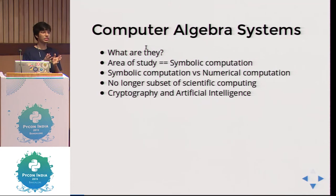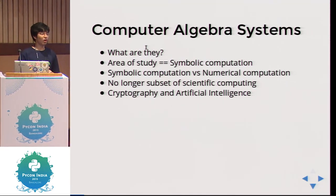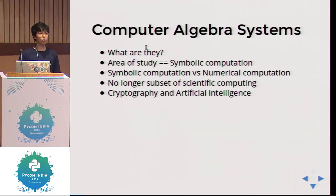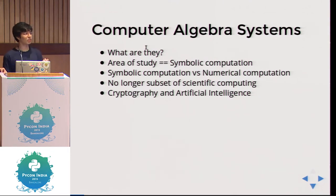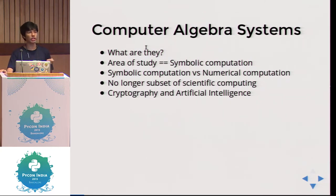What are computer algebra systems? They do algebra — they manipulate mathematical equations. Say you are solving a physics problem and you have a big equation and you want to calculate the integral of that; doing it manually is almost impossible. In theoretical research, solving equations is a very hard problem. Integrals are not a trivial problem — even doing them manually takes time. So if you have a system which does that for you, everything is fine. How is it different from numeric computation? That's the usual question: how is SymPy different from NumPy?